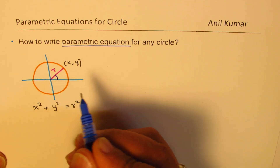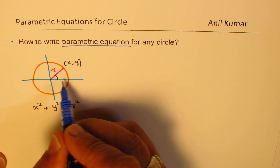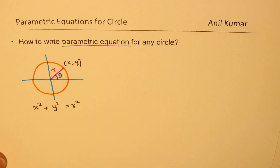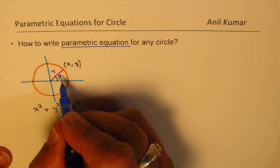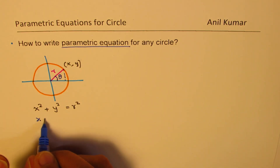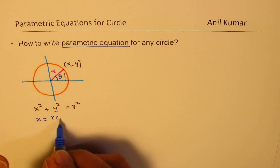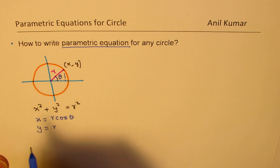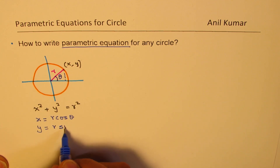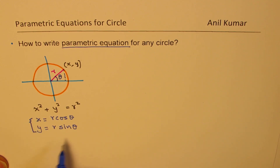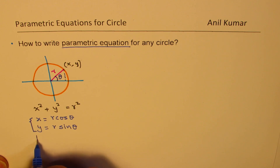When we talk about parametric equations, we are writing equations in terms of some parameter. Normally we can take t as a parameter. For a circle, we can also take theta as a parameter. In that case, we can write x and y as its components: the x value will be r cos theta and y value will be r sin theta. This set of equations is basically the parametric equations.